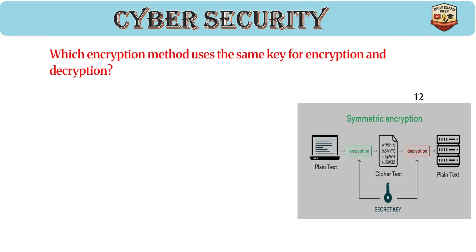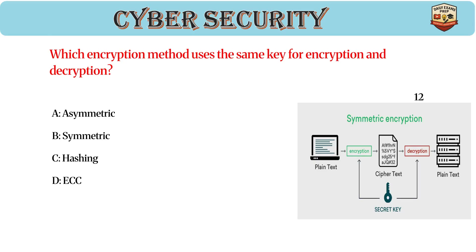Which encryption method uses the same key for encryption and decryption? Answer: B, symmetric. Symmetric encryption uses one key for both operations. Common algorithms include AES, DES, and Blowfish. It is faster than asymmetric encryption.